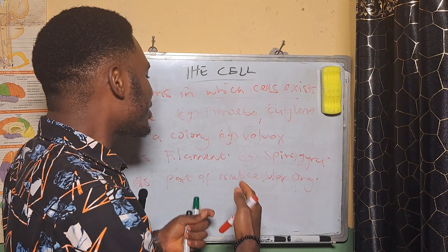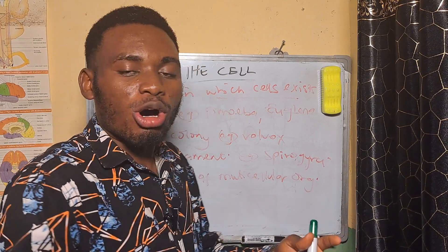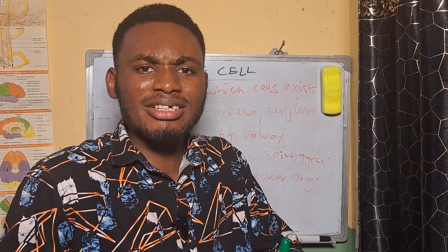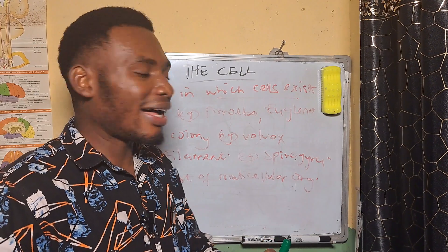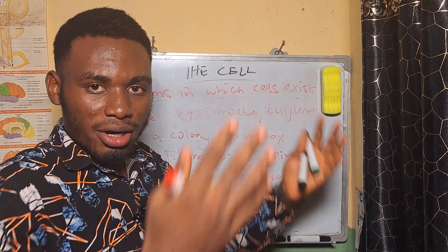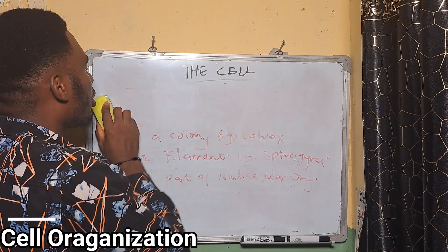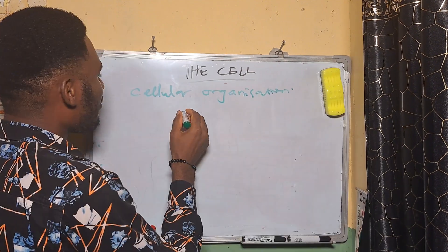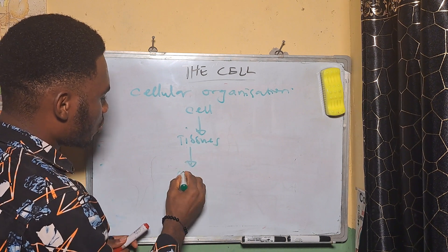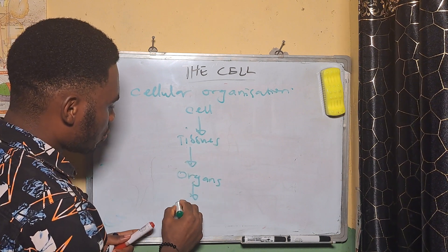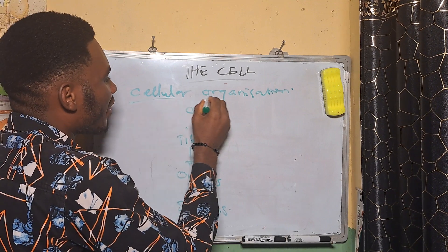Lastly, we have cells that exist as part of a multicellular organism. These cells come together to form tissues — they aggregate to form a part of a multicellular organism, for example the cells we see in humans. This leads us to our last part of the tutorial: cellular organization. We have from cell to tissues, from tissues to organs, and from organs to systems.